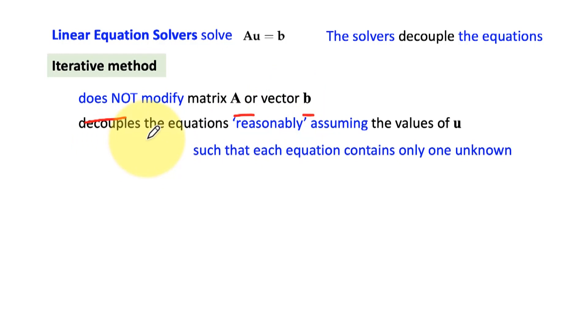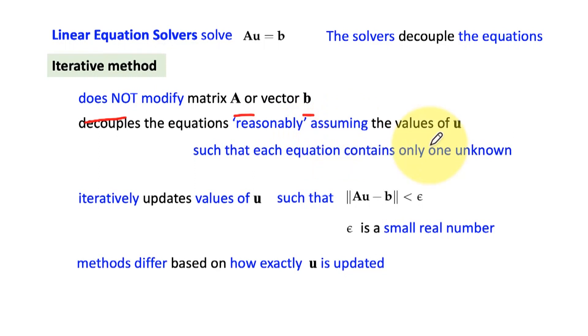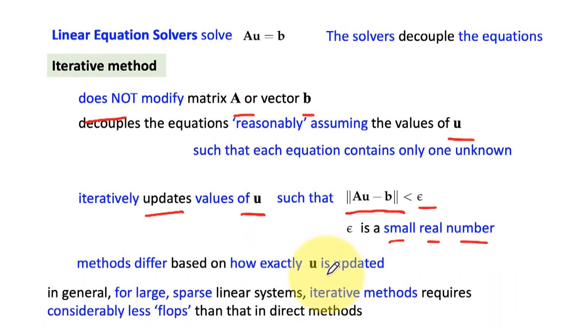What it does is it will decouple by reasonably assuming certain values of the unknown u in a way that each equation will have only one unknown, and values of other unknowns will take reasonable guesses. Once we achieve that, we will iteratively update the values of u. And how we update it will come when we talk about particular methods, but we will keep on updating them until we reach a stage where we can say, well, the norm of Au - b is small enough, and we set a number epsilon, which is a small real number which we decide based on the applications we are handling. And then we can devise our method of how we will iteratively update, how we will add correction. So how exactly we will update u, that gives us different types of methods.